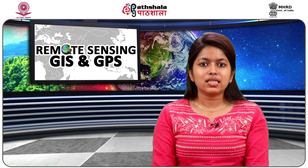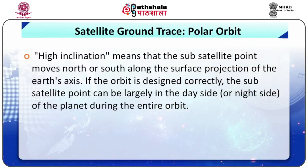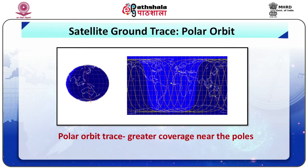High inclination means that the sub-satellite point moves north or south along the surface projection of the earth's axis. If the orbit is designed correctly, the sub-satellite point can be largely on the day side of the planet during the entire orbit. Such an orbit is termed sun-synchronous.